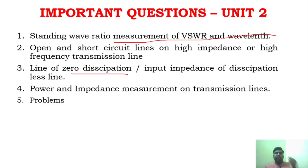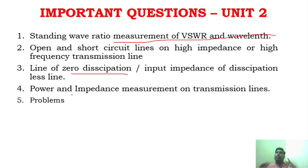For Unit 2, also power and impedance measurement on transmission lines is important. You need to understand the difference between a dissipation line and a dissipation-less line. Problems in Unit 2 are essential — if you study these four questions and their related problems, you will be in a safer side.